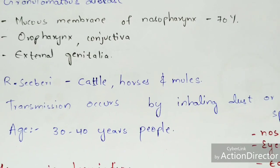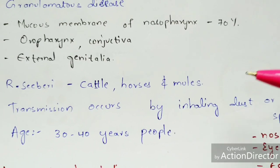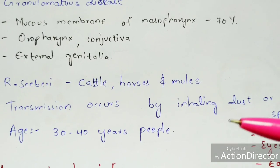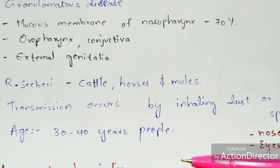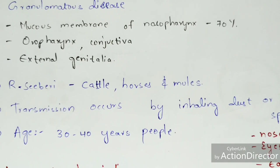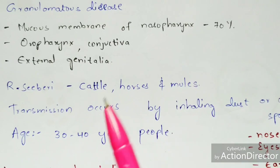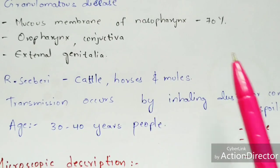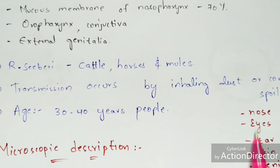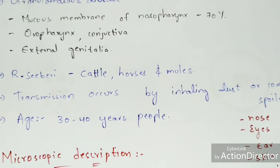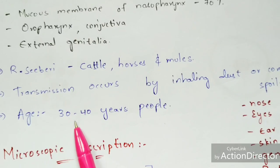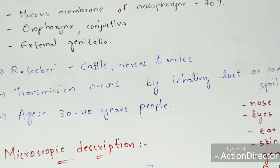If that water contains this causative organism, it immediately enters through the nose or mouth and reaches the body. Transmission can also occur through the regions of the nose, eyes, ears, skin, genitalia, and rectum. People aged 30 to 40 years are most commonly affected.